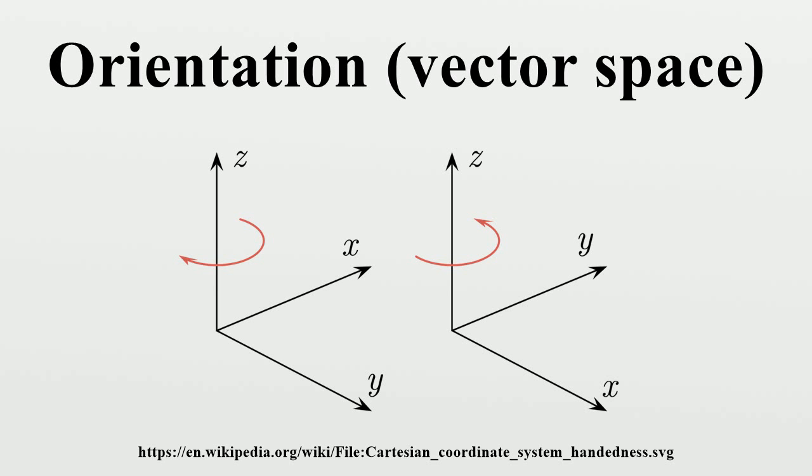the two possible basis orientations are called right-handed and left-handed. The orientation on a real vector space is the arbitrary choice of which ordered bases are positively oriented and which are negatively oriented.